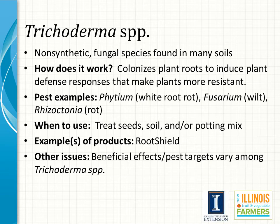Trichoderma is a non-synthetic fungicide made from fungal species found in many soils. It can be applied around the roots of a plant and induce plant defense responses that make plants more resistant to soil-borne pathogens. Some examples of pathogens it targets are Pythium, which causes white root rot; Phytophthora, which causes wilt; and Rhizoctonia, which causes rot. Trichoderma must be applied whether on seeds, mixed in the soil, or added in the potting mix for seed starting. An example of a Trichoderma product is RootShield. One word of caution is that it can have varying effects on the soil-borne plant pathogens it is targeting.